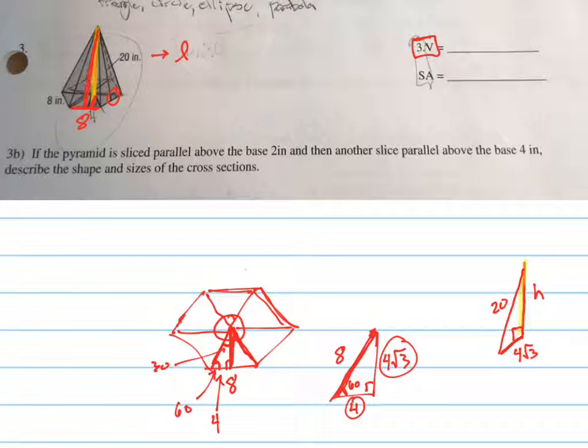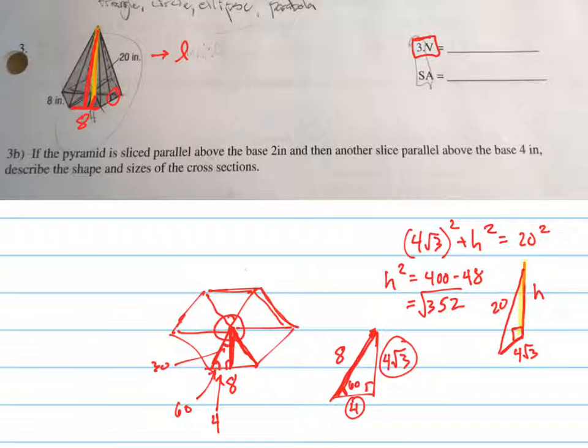So now we can find the height by using Pythagorean's theorem. Pythagorean's theorem is 4 root 3 squared plus h squared equals 20 squared. So h squared equals 400 minus 16 times 3, which is 48. Good. 48. So that's 352, the square root of 352. We can just leave it as square root of 352, because really we want to find the volume.